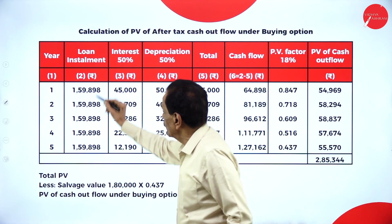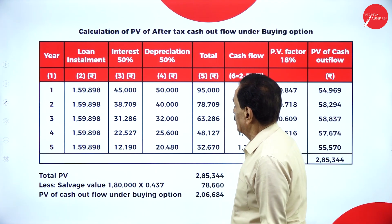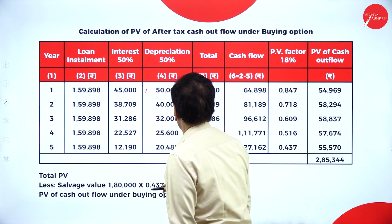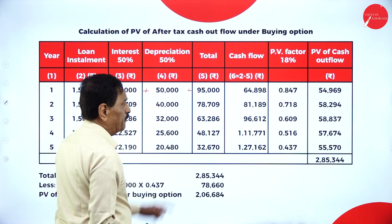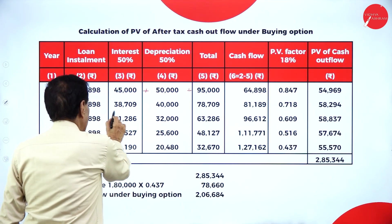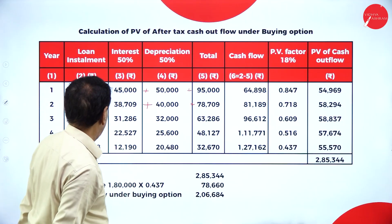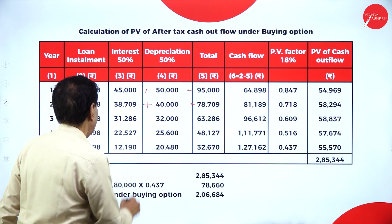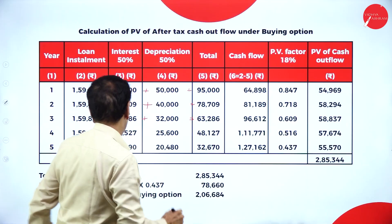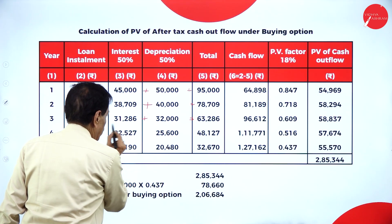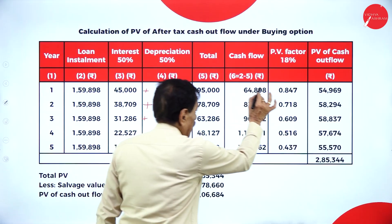Calculation of cash outflow under the buying option. The loan installment is the cash outflow. Interest is already calculated. Tax saving: interest plus depreciation multiplied by 50%. Year 1: interest 90,000 plus depreciation 1,00,000 = 1,95,000 × 50% = 97,500 tax saving; net cash outflow = 1,59,898 − 97,500 = 62,398. Multiplied by discount factor 0.847. Year 2 and Year 3 calculated similarly using their respective interest, depreciation, and discount factors 0.718 and 0.609.